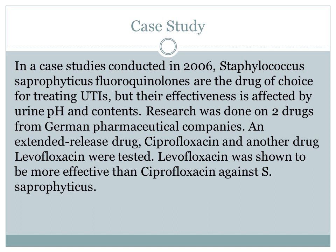In a case study conducted in 2006, fluoroquinolones are the drug of choice for treating Staphylococcus saprophyticus UTIs, but their effectiveness is affected by the urine pH and contents. Research was done on two drugs from German pharmaceutical companies: an extended-release drug, ciprofloxacin, and another drug, levofloxacin. Levofloxacin was shown to be more effective than ciprofloxacin against Staphylococcus saprophyticus.